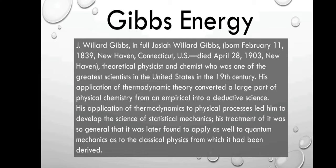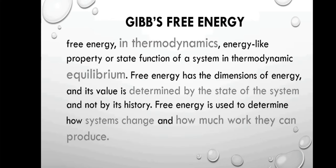His application of thermodynamics to physical processes led him to develop the science of statistical mechanics. His treatment was so general that it was later found to apply to quantum mechanics as well as to the classical physics from which it was derived. G, or Gibbs free energy, in thermodynamics, is an energy-like property or state function of a system in thermodynamic equilibrium. Its value is determined by the state of the system and not by its history.